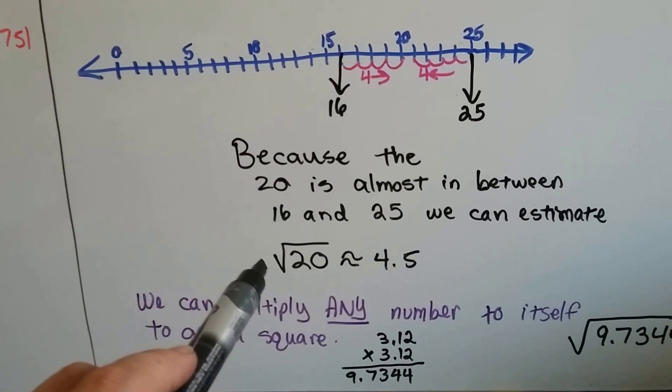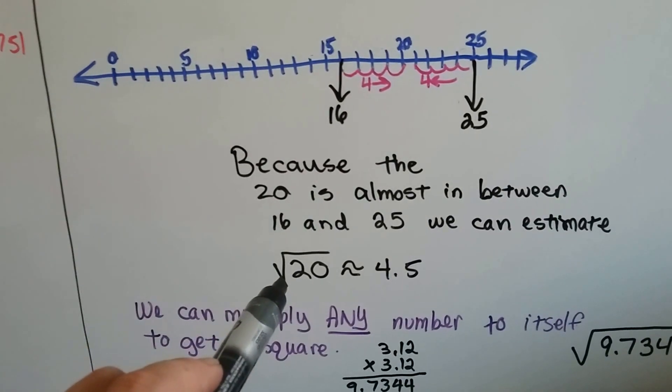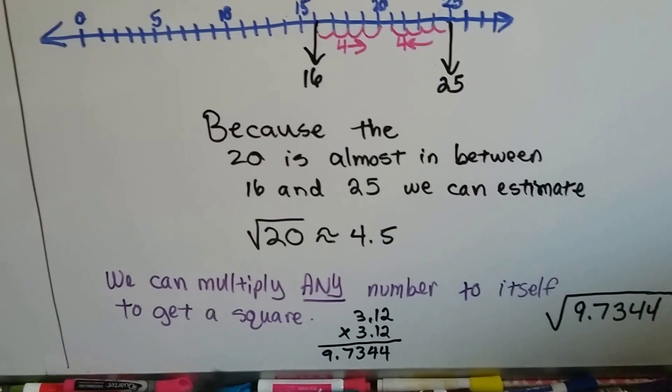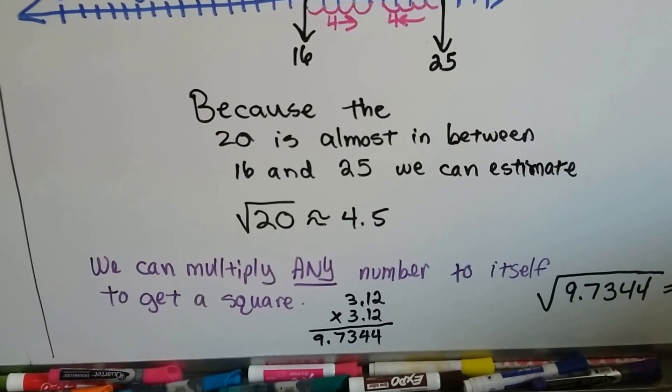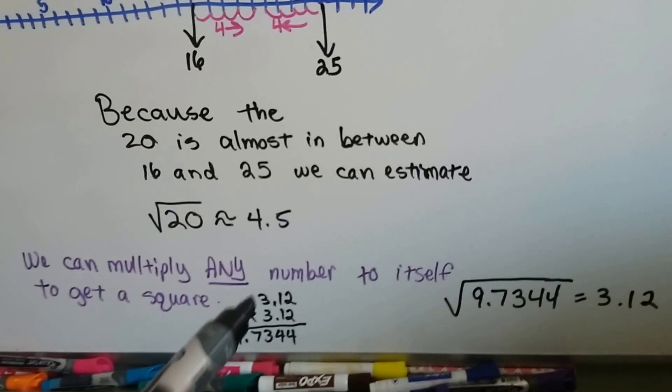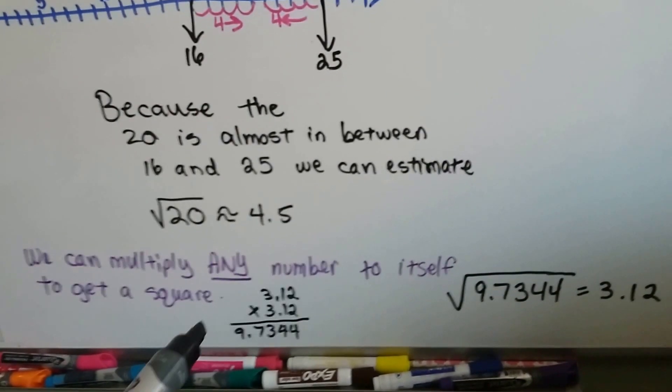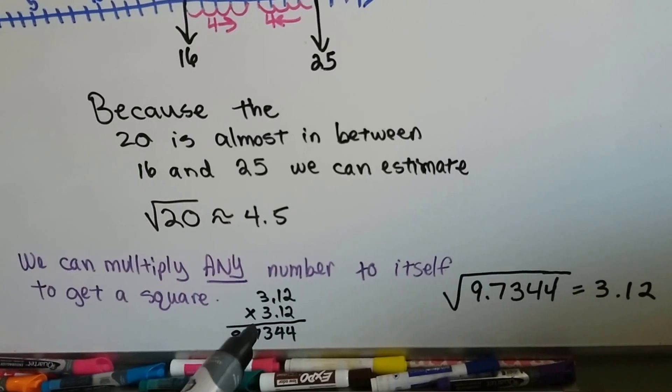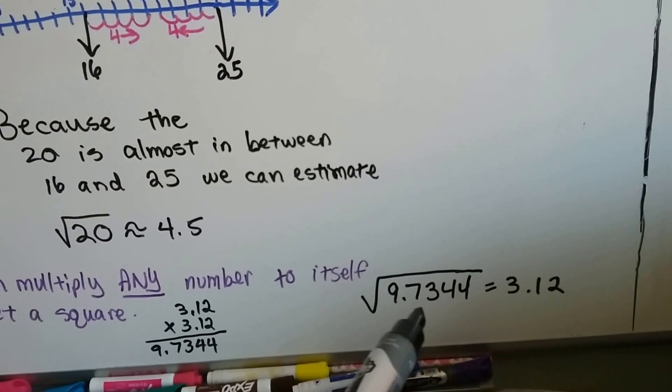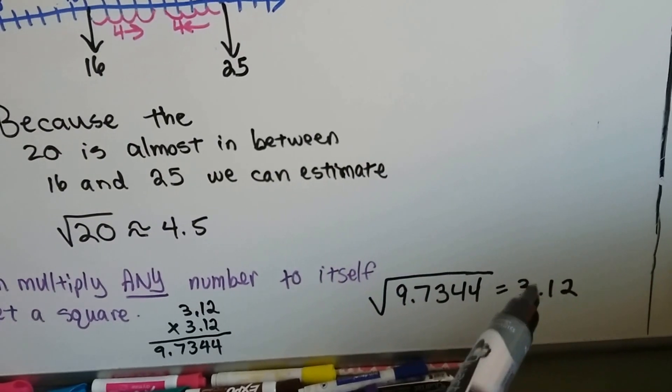Or 4.5. So we're estimating. So the estimate of the square root of 20 is approximately 4.5. We can multiply any number to itself to get a square, even 3.12. If I multiply 3.12 times 3.12, I get 9.7344. The square root of 9.7344 is 3.12.